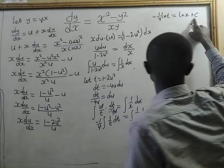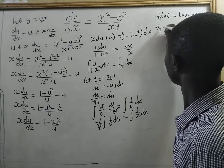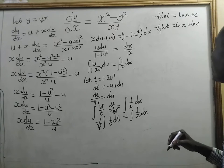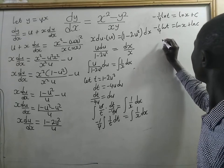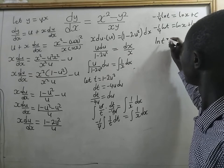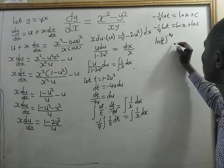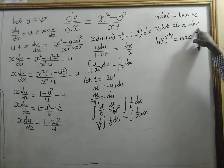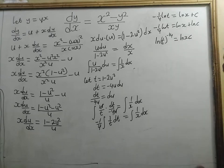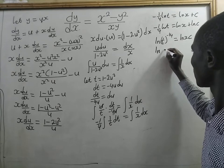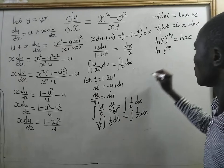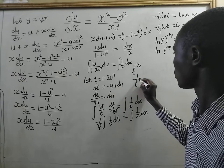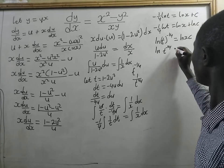We can write our integral constant as natural log of c. So we have natural log of t to the exponent negative 1 on 4, equal to natural log of x times c. That is, when adding logs we multiply the numbers. So we have ln(t^(−1/4)) equal to ln(xc), which gives 1 on t^(1/4) equal to natural log of xc.